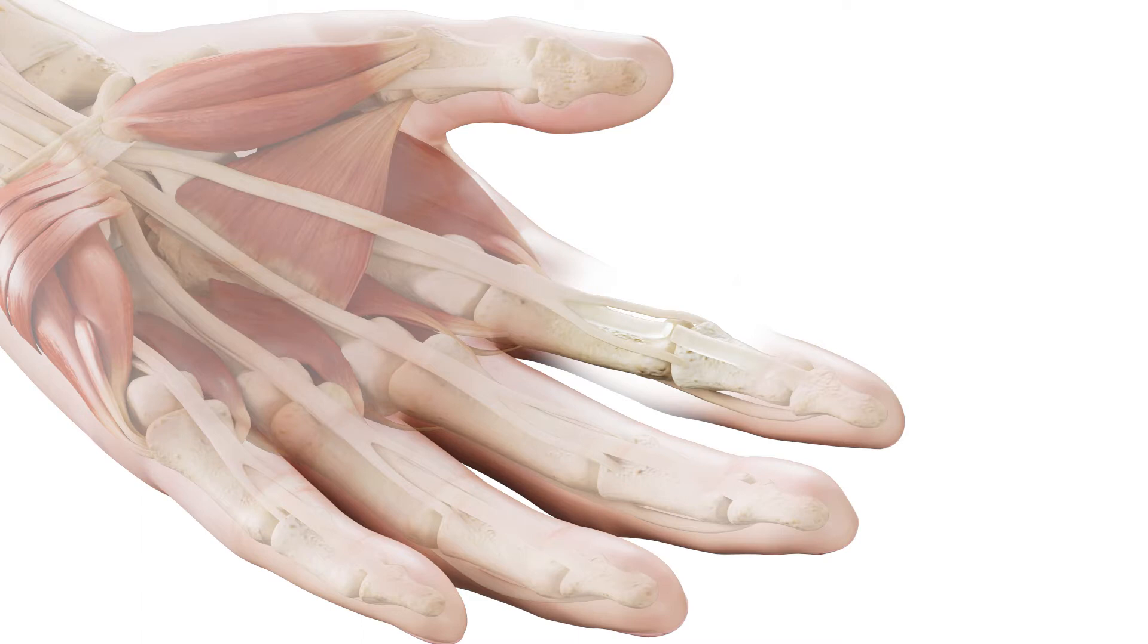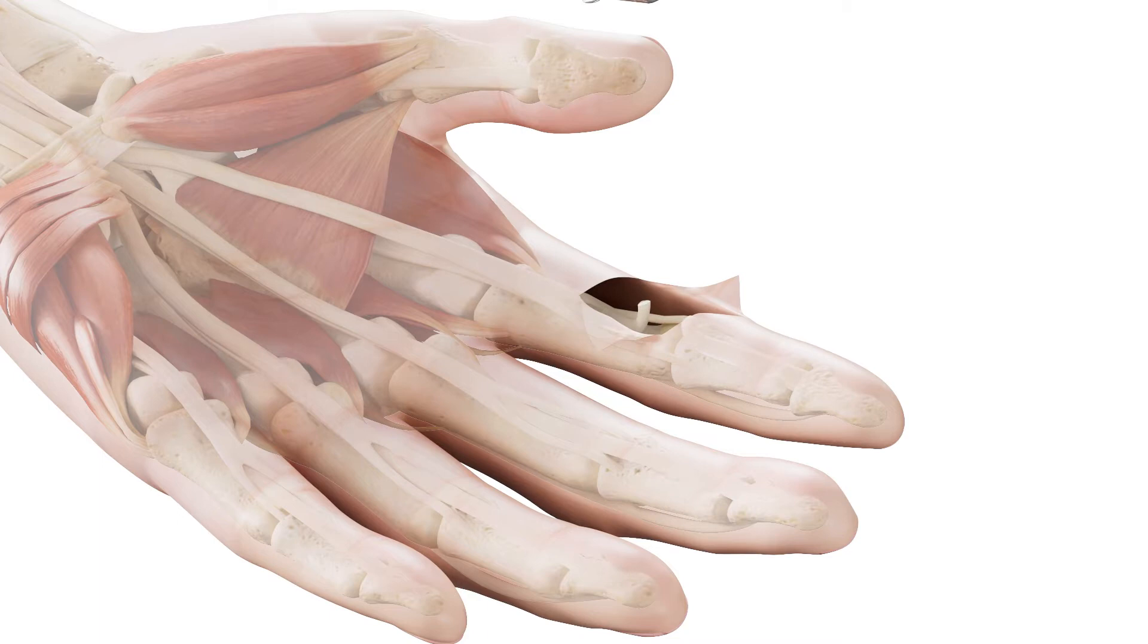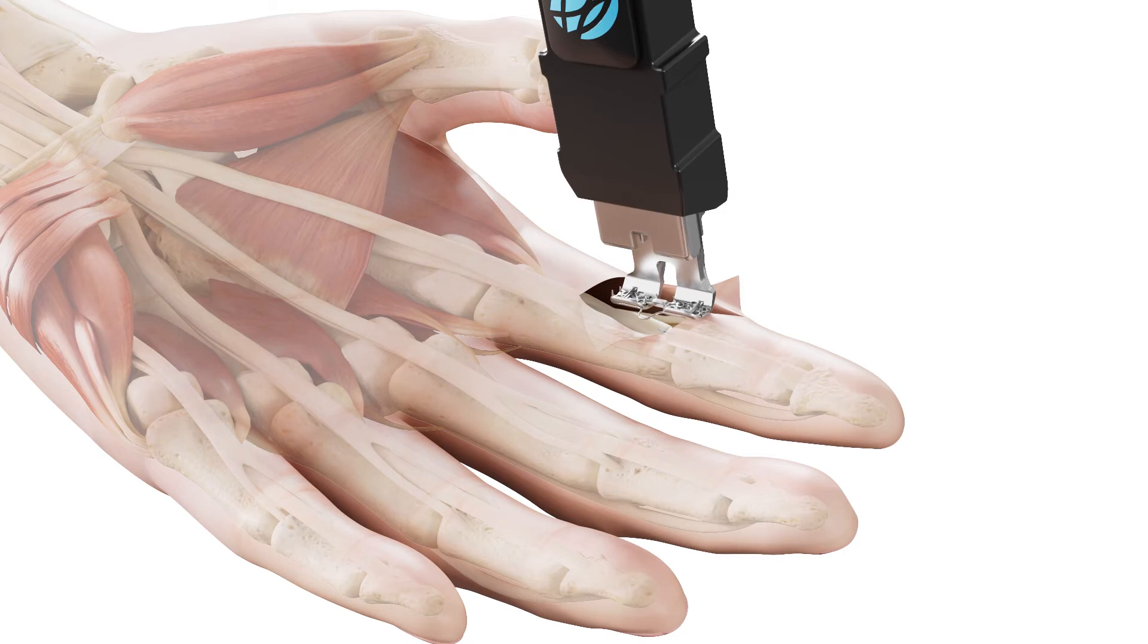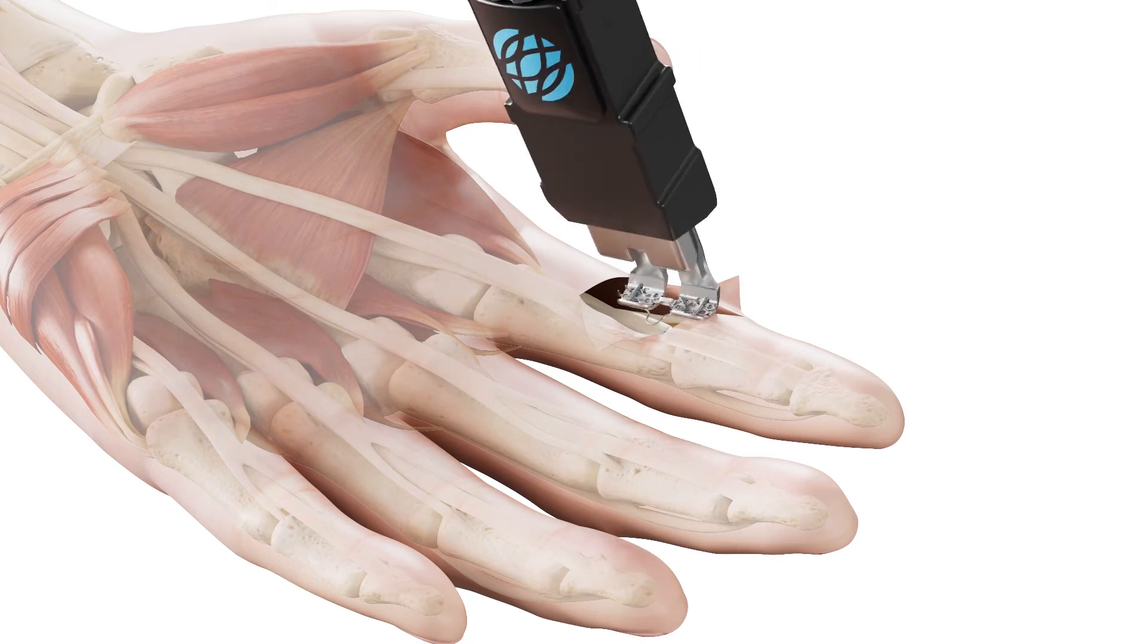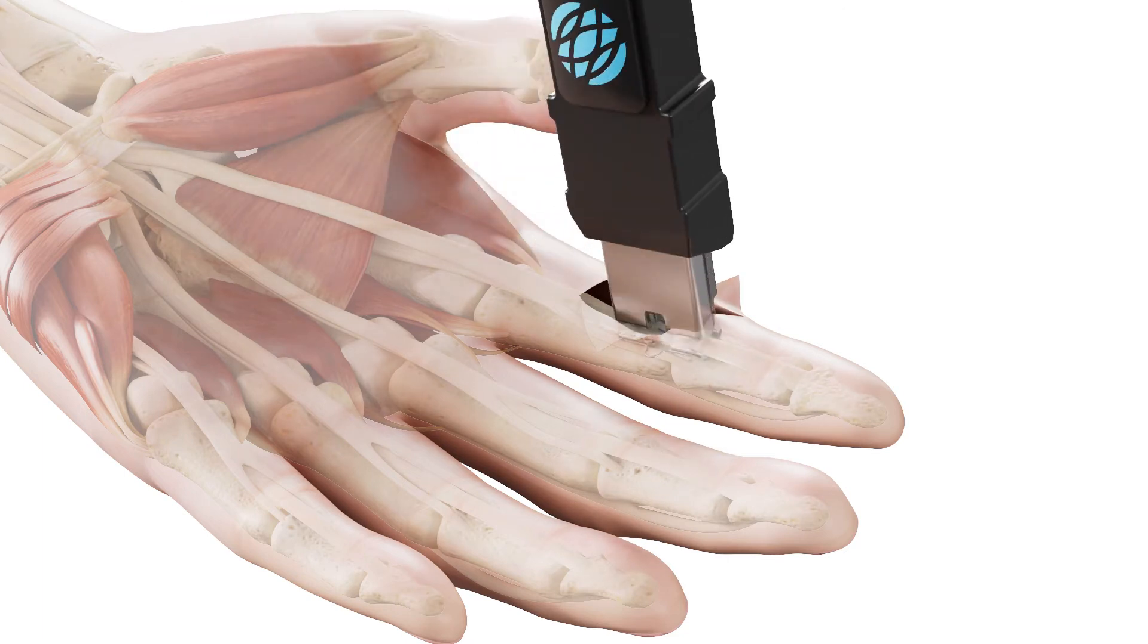Approach the lacerated tendon using a preferred surgical technique. Create an access point in the sheath by creating a 2cm incision over the laceration. Retrieve tendon ends using a standard technique and approximate the ends using two epitendinous corner sutures or a preferred alternative approximation technique. You are now ready to use the Connections TR Tendon Repair System.